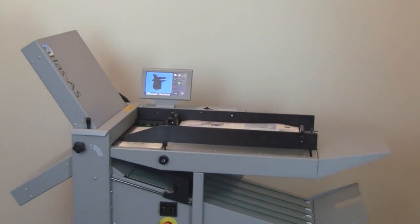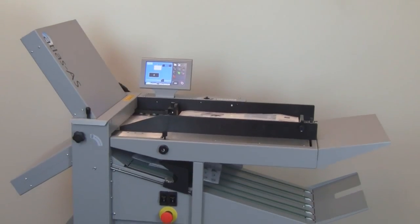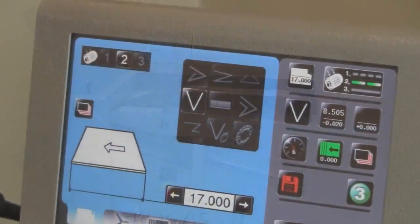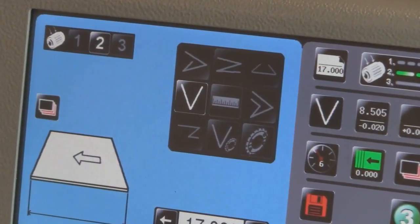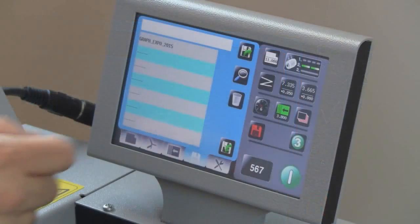Now let's automate the fold setup process with the Atlas AS. The Atlas AS is pre-programmed for six popular fold types in three different sizes. In addition, an unlimited number of custom jobs can be stored.